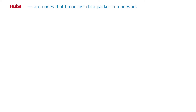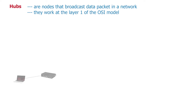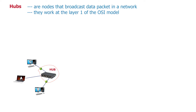In today's lesson, we will start with hubs. A hub is a node that broadcasts data packets in a network. Hubs work at layer 1 of the OSI model. In this illustration, we can create a simple LAN network using a hub in place of a switch. But since this is a hub, it will broadcast every packet to all connected devices in the network.